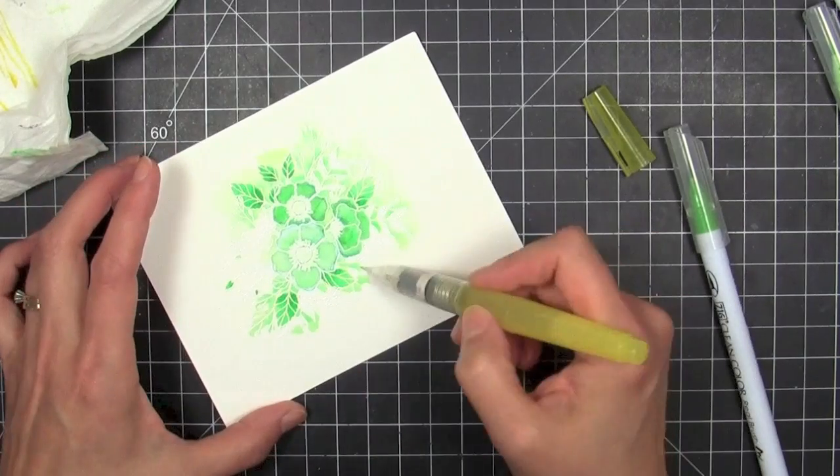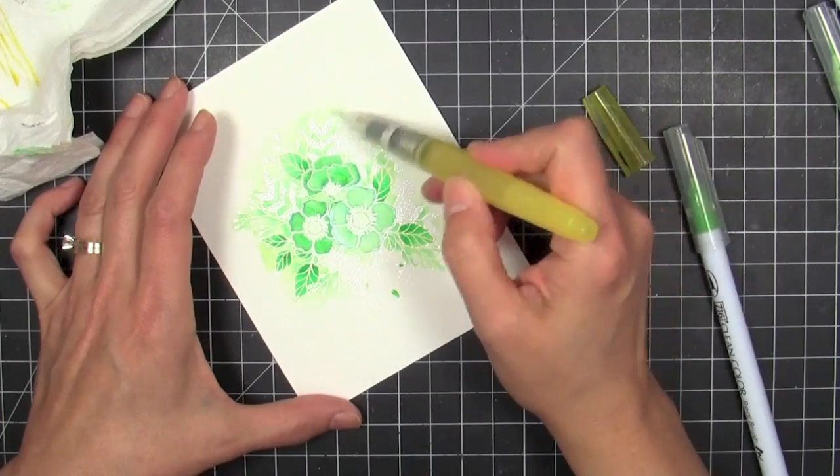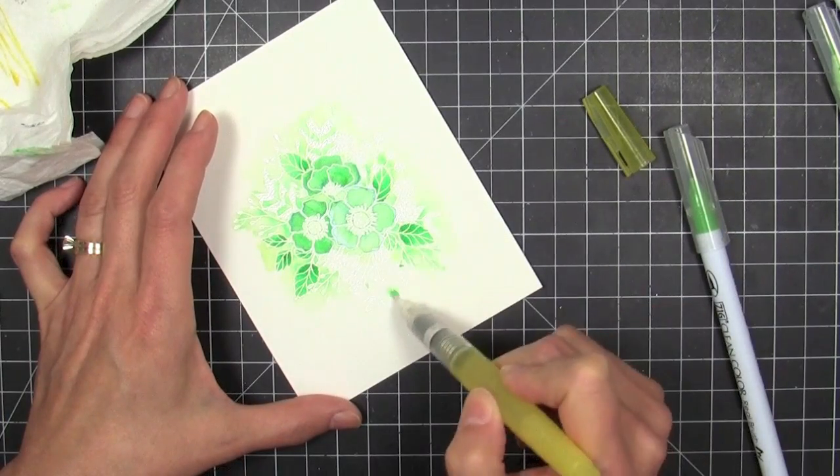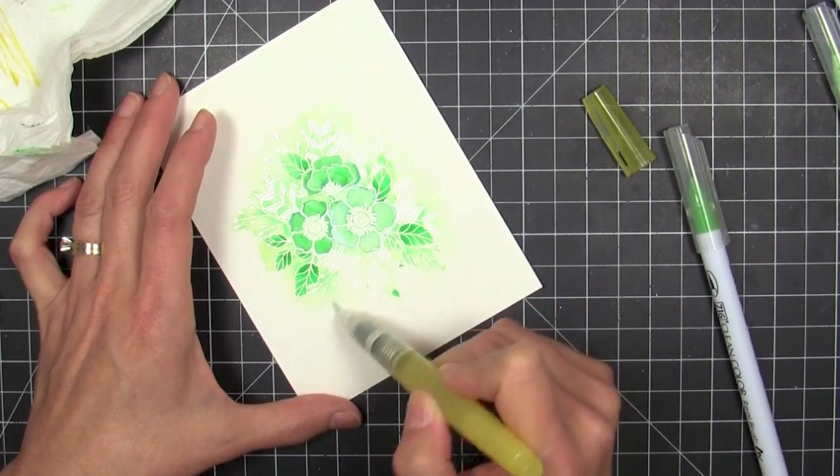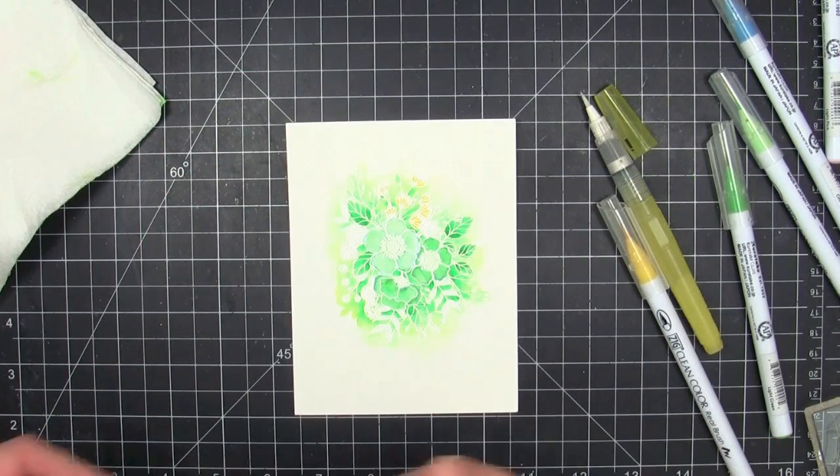And I have to rotate my paper as I'm working because I like to pull my brush out in a certain direction. And so for some reason it's easier for me to just keep rotating my paper as I work. So I'm sorry it's kind of spinning around there as I go.